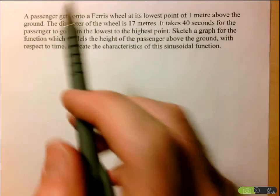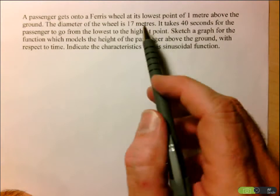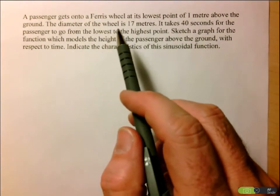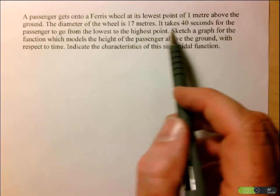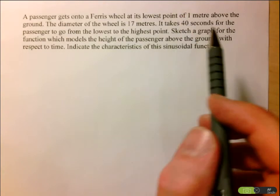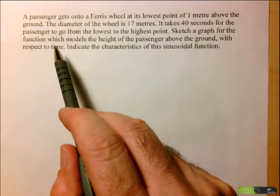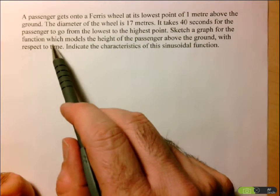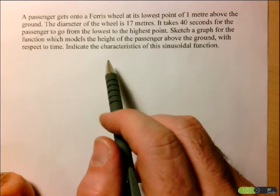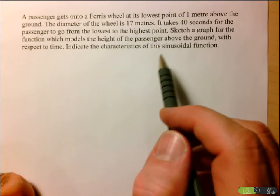Let's read the question. A passenger gets onto a Ferris wheel at its lowest point of one meter above the ground, and the diameter of the wheel is 17 meters. It takes 40 seconds for the passenger to go from the lowest to the highest point. We want a sketch of the graph modeling the height of the passenger above the ground with respect to time, and we also want the characteristics of this sinusoidal function.